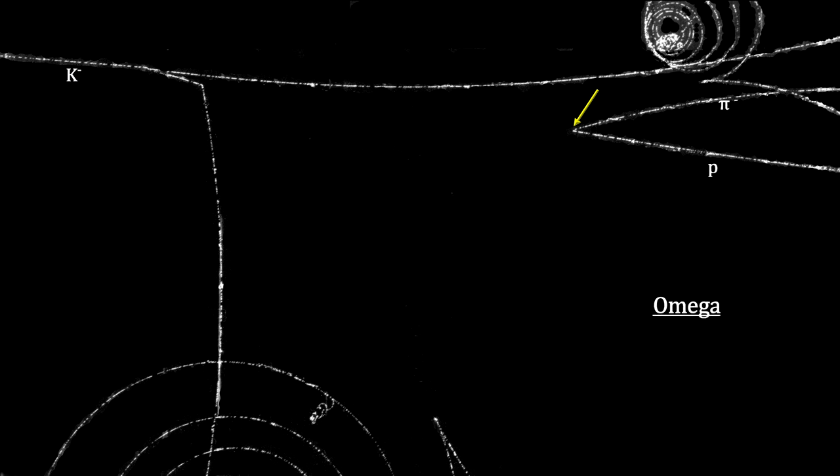This is the trademark decay signature for the lambda particle. We also see v's in the upper right and in the lower middle where positron and electron pairs are created. This is the signature for high energy gamma rays.